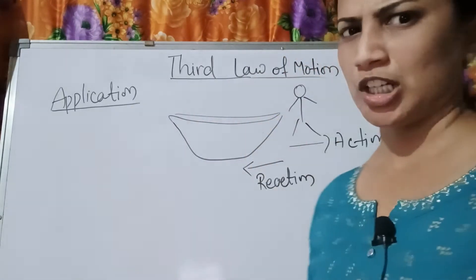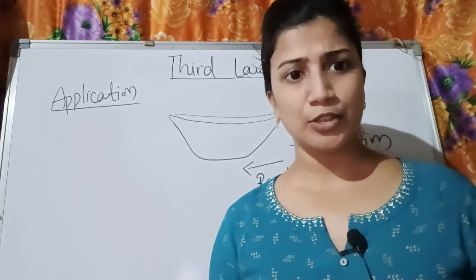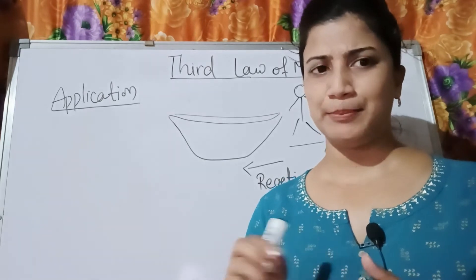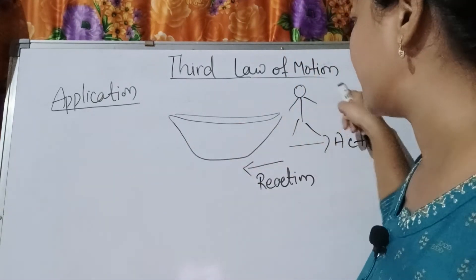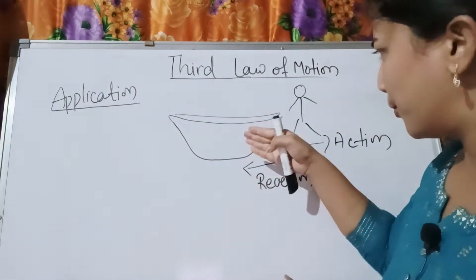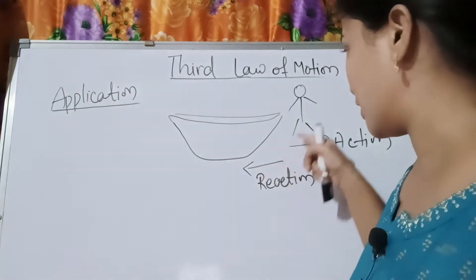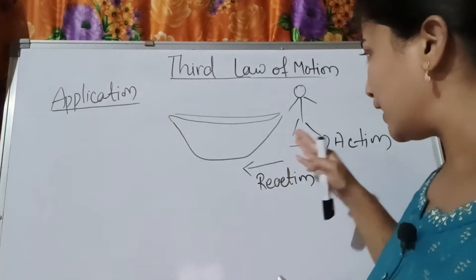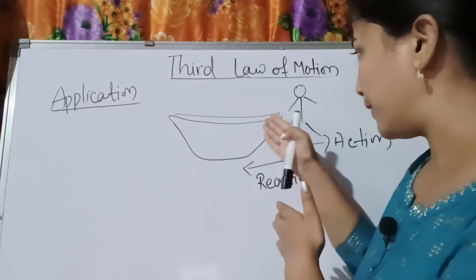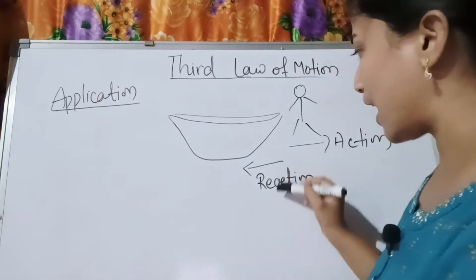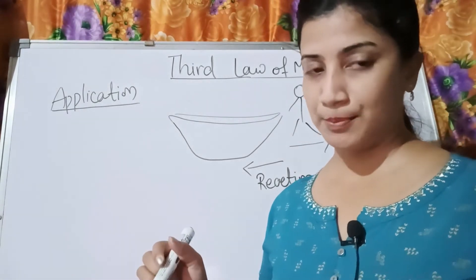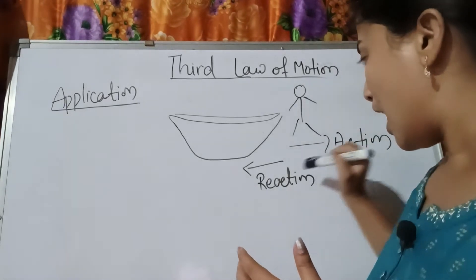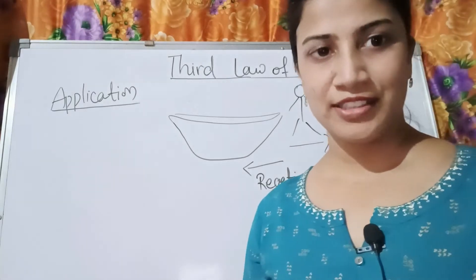Now let's look at applications of Newton's third law. The first application is a boat example. When you jump from a boat, the force you apply on the boat is the action. In reaction, the boat moves backward. This is a very common observation — when you jump from a boat, the boat moves in the opposite direction due to reaction.